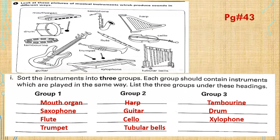The second group is harp, guitar, cello and tubular bells. All of them use strings to produce sounds. And in third group, we will put tambourine, drum and xylophone, where the skin of such instruments are used for producing sound.